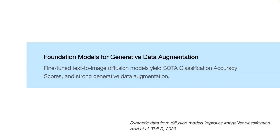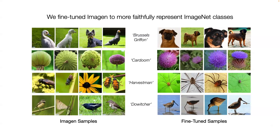There was a problem: ImageNet class names like 'trunk' or 'chest' are ambiguous in English. Simply prompting Imagen with 'a photo of a trunk' might produce an elephant trunk rather than a storage trunk. People have tried prompt engineering or prompt inversion — starting with ImageNet images, figuring out the right prompt, then generating more images. What we decided to do was something really simple: just fine-tune the Imagen model on ImageNet classes and labels directly.